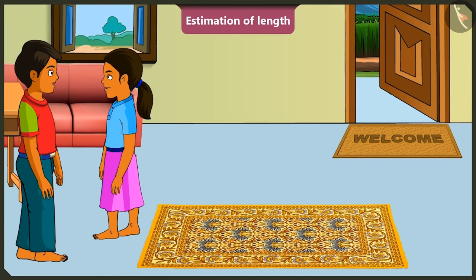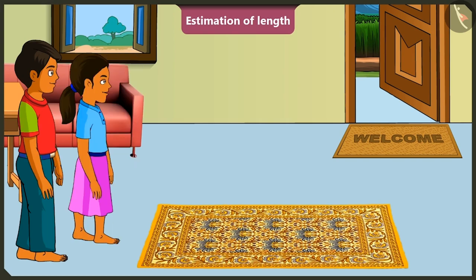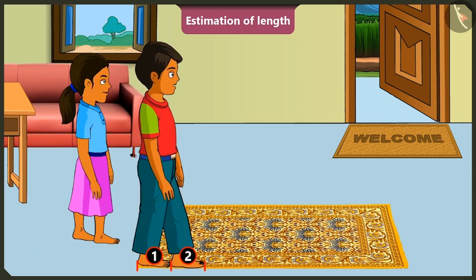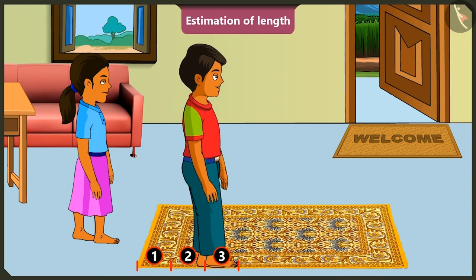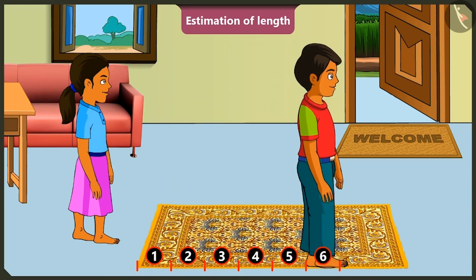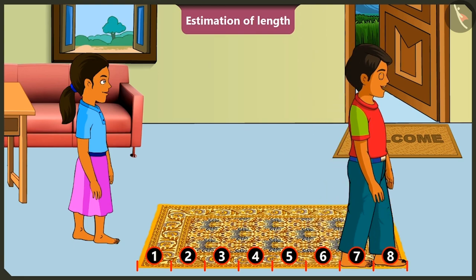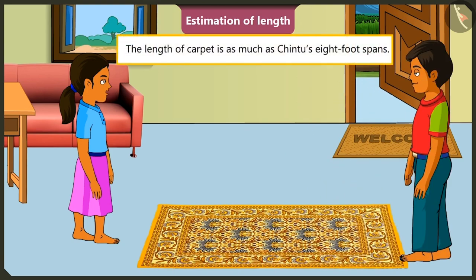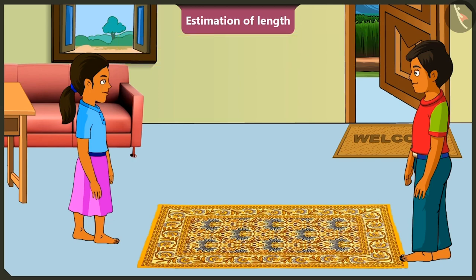Now let me show you a magic. Magic? Yes. Now I will measure this carpet with my feet: one, two, three, four, five, six, seven, and eight. Hey, the length of this carpet is only eight feet! Brother, the length of this carpet has been reduced by your magic.